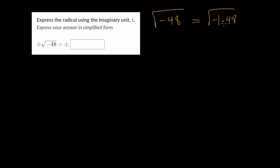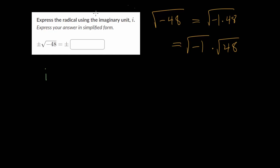The reason we do this is so that we get a product, since if we have a product underneath the square root, we can separate that into a product of two different square roots. So the square root of minus 1 multiplied by the square root of 48. We know that our imaginary unit i is just the square root of minus 1, so we can replace this square root with just i.